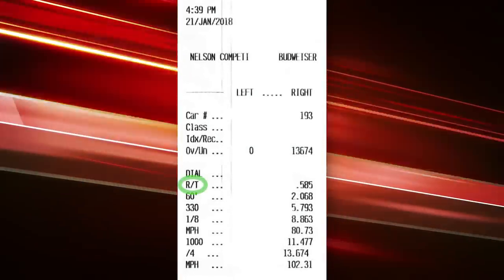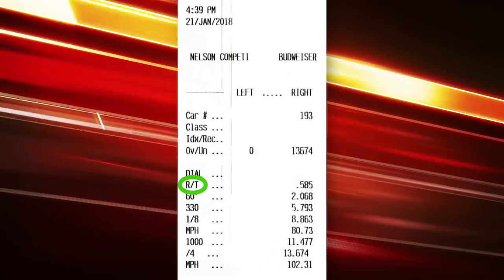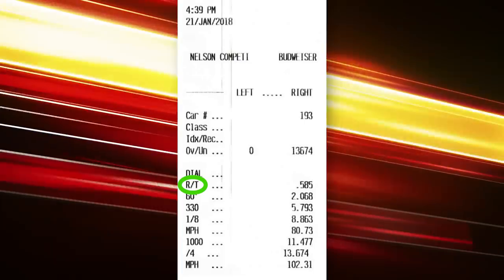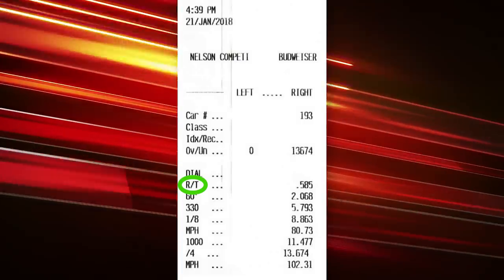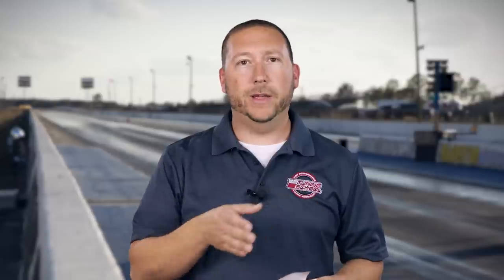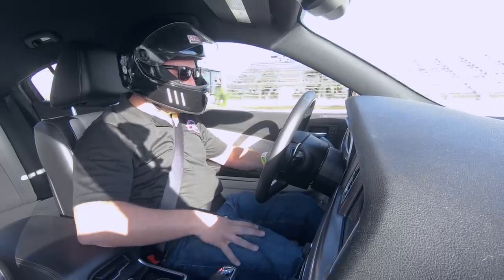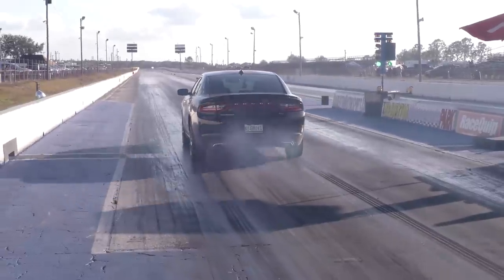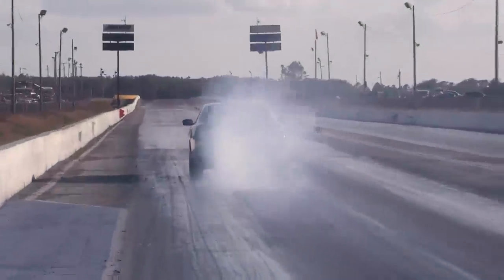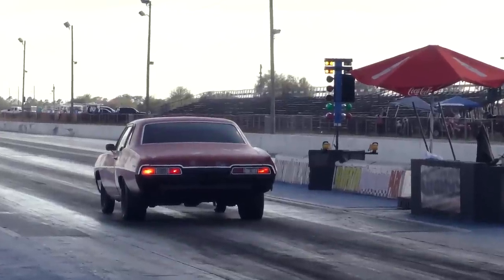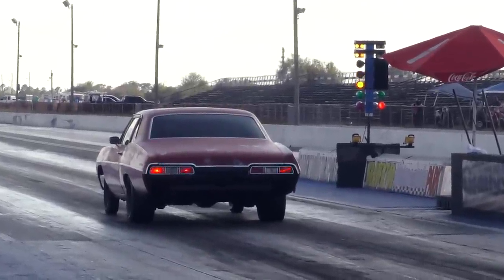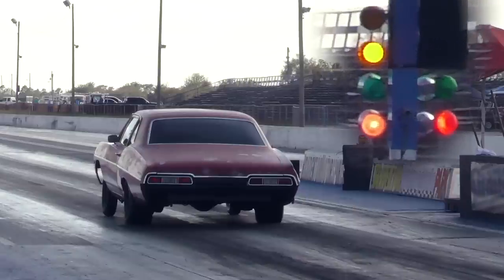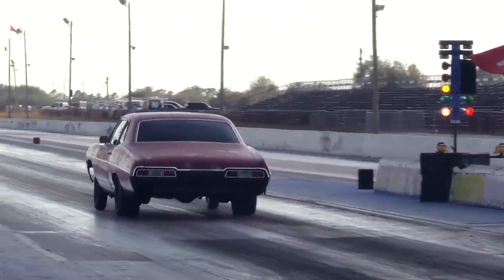The first thing you're going to get is what's called the RT, or reaction time. Depending on the type of tree or light setup used, it will reflect a number all the way down to zero. A perfect reaction time — when you left, the car was moving and the light turned green — would be zeros. You can also see a negative number; that's called red lighting. When you red light, you left before the light turned green, and it'll show a negative number beside the RT. That means you lost automatically.